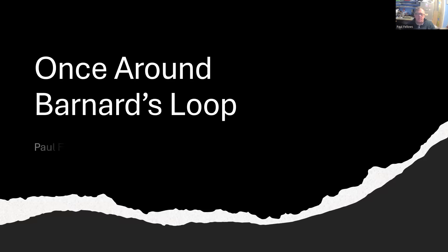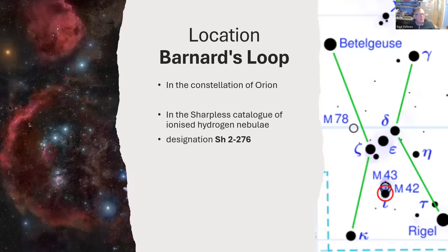Once around Barnard's Loop. So Barnard's Loop is an enormous structure in the sky in the constellation of Orion. It's listed in the Sharpless catalogue of H2 regions of ionized hydrogen forming nebulae and gets the catalogue number SH2-276. So I've drawn Orion over there on the right-hand side with the Orion Nebula ringed in red there at M42.